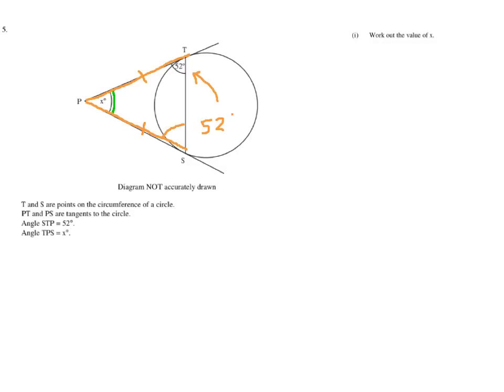So I can say that 52 plus 52 plus x, well, adding them all up, must equal 180 degrees. And now I just need to solve this equation.